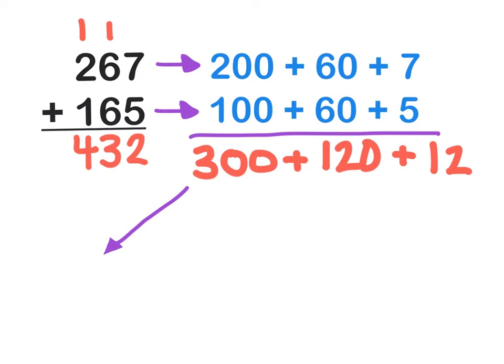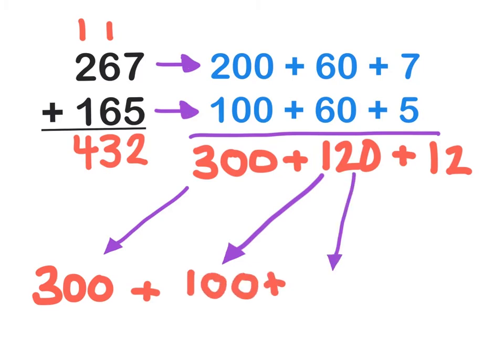I'm going to leave 300 the same and write it here. And then I can break apart the value of 120 into 100, and then 20. And lastly, I can break apart 12 into 10 and 2.